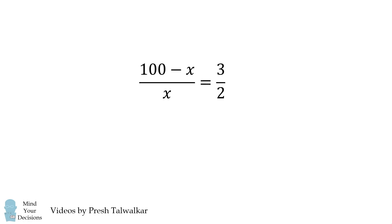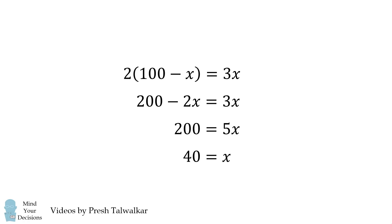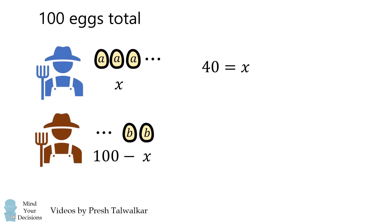From here, we can cross multiply and we have a linear equation in x. We can systematically solve for x. We thus get that x is equal to 40. Now recall x is equal to the number of eggs of the first farmer.